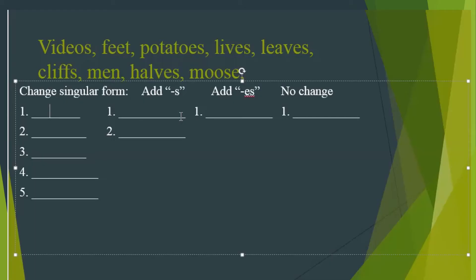Now let's solve this exercise together. The words are: videos, feet, potatoes, lives, leaves, cliffs, men, halves, and moose. In the first column, it says: change singular form.